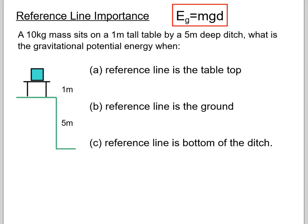So now reference line has a bit of an importance when it comes to calculating gravitational potential energy. So if we have a 10 kilogram mass, and it sits on top of a one meter tall table right beside a five meter deep ditch, what is the gravitational potential energy when the reference line is the table top? So if we were to put a reference line, let's use red, right there. Well that would mean that the d or the h, the d in this case would be zero. So our potential energy, if we put the reference line at the table top, this object would have zero joules of potential energy.